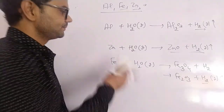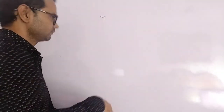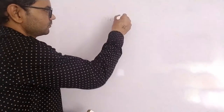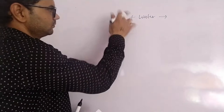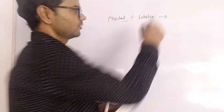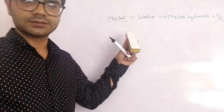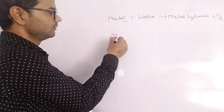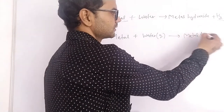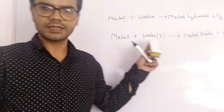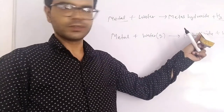The general format is: metal plus water gives metal hydroxide plus hydrogen gas. For less reactive metals, where water is in gaseous form (steam), they form metal oxide plus hydrogen gas. All metals that react with water release hydrogen gas.